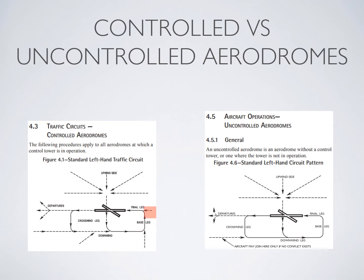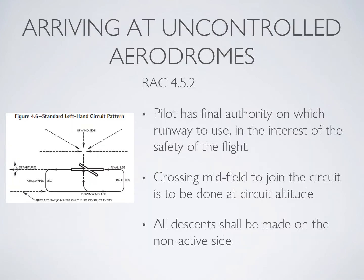However, at an uncontrolled aerodrome, you no longer have a controller. Traffic needs to separate itself, and therefore pilots should only ever approach from the upwind side — which I also call the dead side — and make their approach to the circuit via crossing midfield to join the downwind. They can join direct into the downwind if no conflict exists. Because there is no controller, it's up to the pilots themselves to maintain enough physical separation between aircraft that they don't create a hazard to each other.